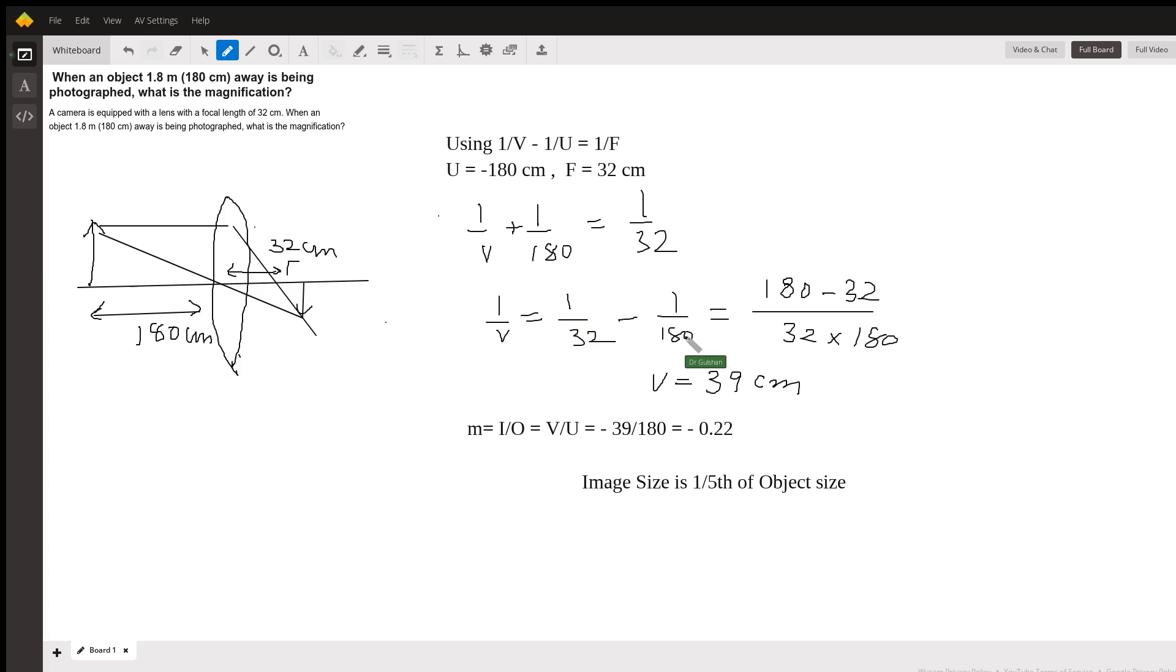That gives us v equals 39 centimeters, and the image is on this side. So the image distance from the lens is 39 centimeters.